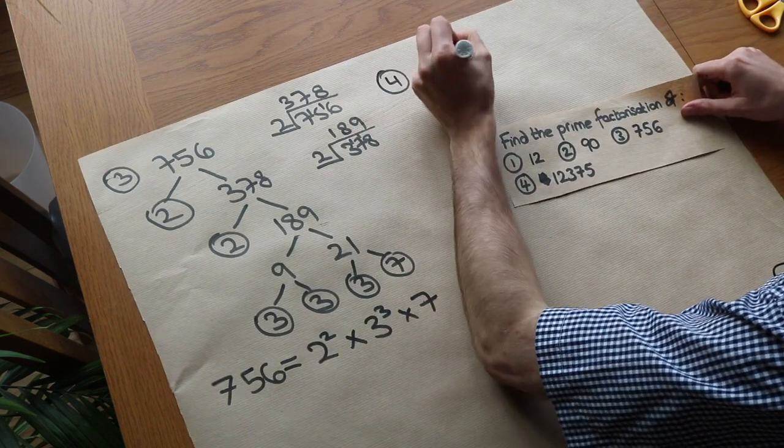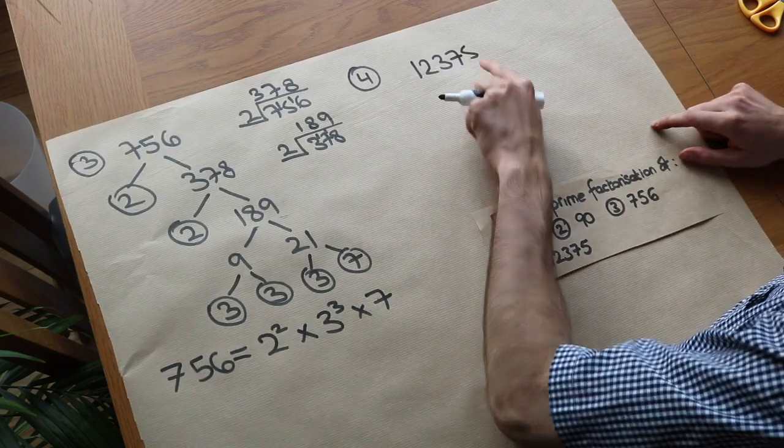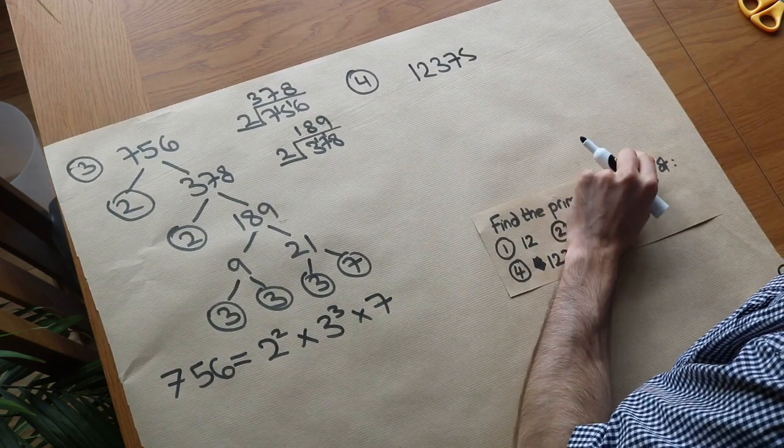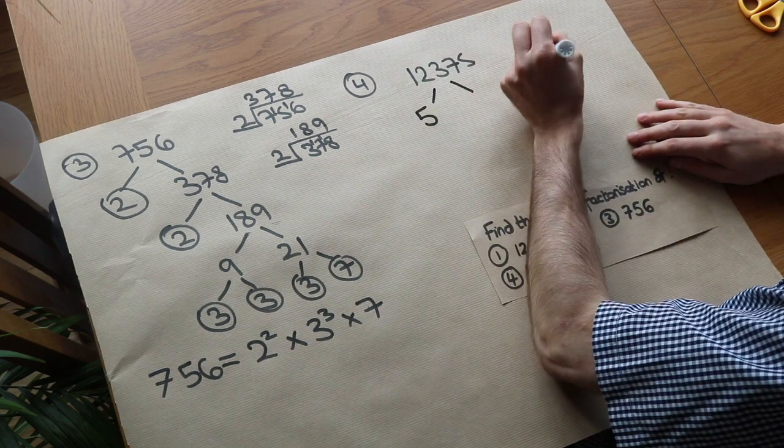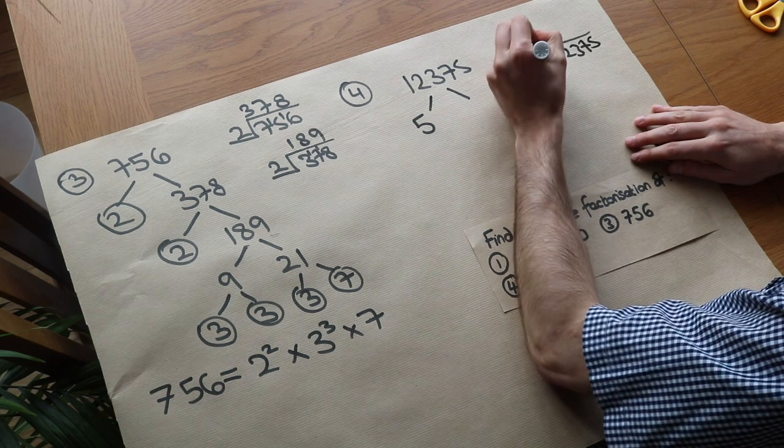And then this final one. We've got 12,375. Well, what's an obvious number it divides by? Well, 5, because it ends with 5. So it must divide by 5. So let's divide it by 5. We'll do a bit of long division. 12,375 divided by 5.